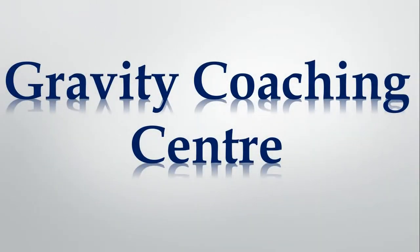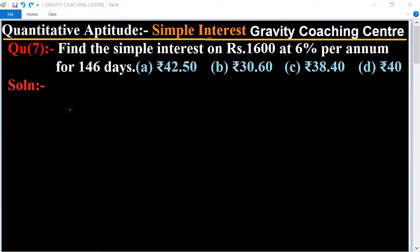Welcome to our channel Gravity Coaching Centre. Quantitative Aptitude chapter: Simple Interest, question number seven. Find the simple interest on Rs. 1600 at 6% per annum for 146 days. In this question, given principal equal to 1600.